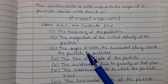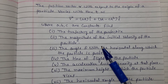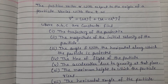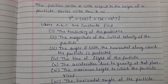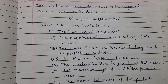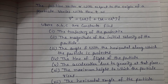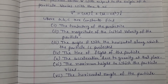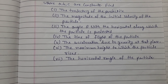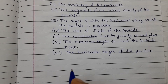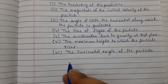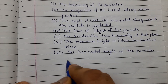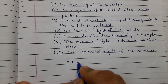This question is from projectile motion where the position vector of a particle is given. We'll see how to deal with and solve this. The concept is very simple. Let's start. So the position vector r is equal to at·î plus (bt - ct²)·ĵ.